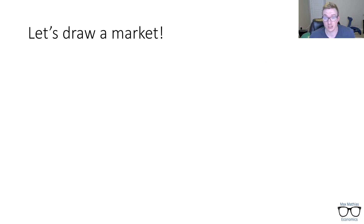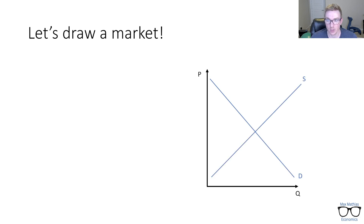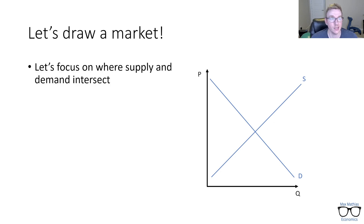So let's get started and draw a market. We have our axes — price and quantity — and then we draw our generic demand curve, downward sloping, and our generic supply curve, upward sloping. So this is our starting point.